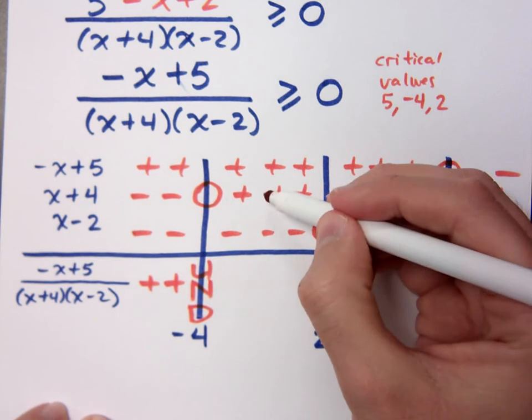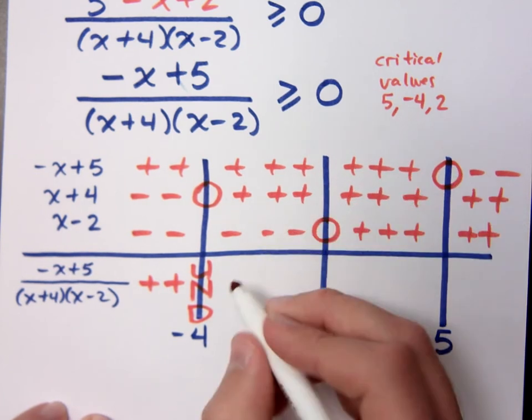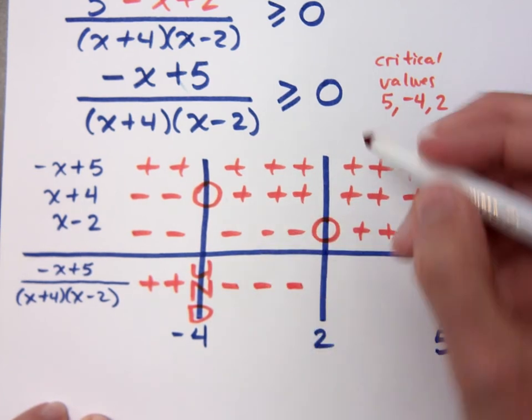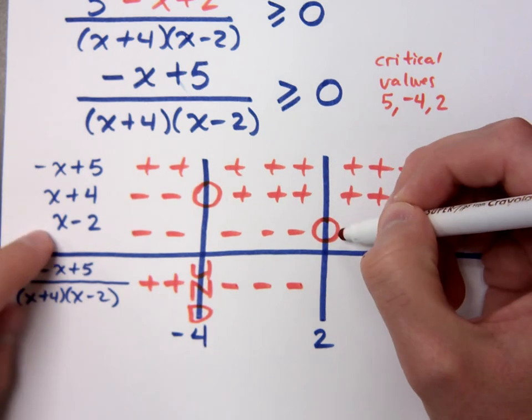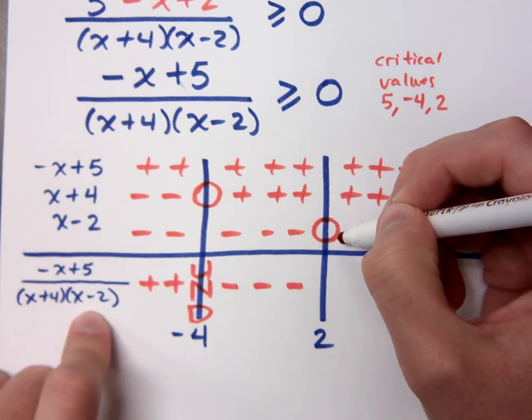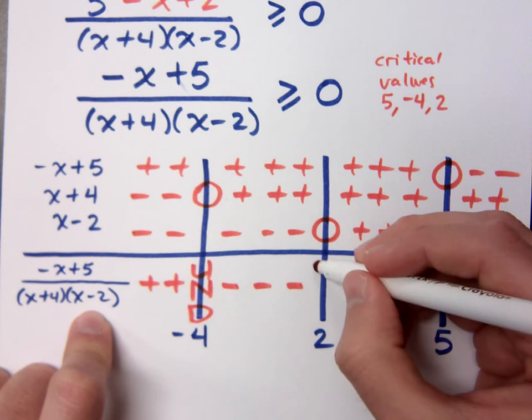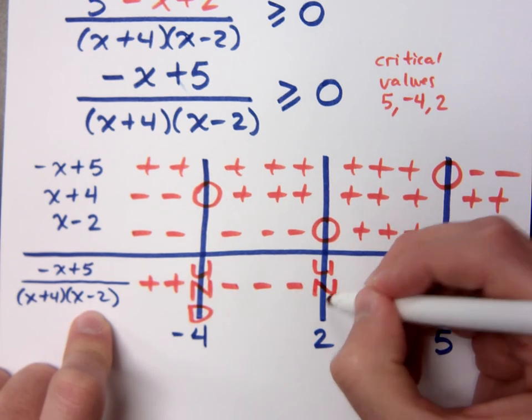What about positive, positive, and negative all together? Negative. Positive, positive. This 0 comes from my denominator, so what is that? Undefined. We're undefined when you have those gatekeepers in the denominator.